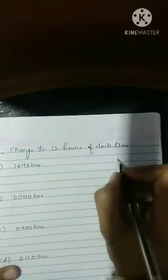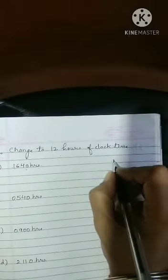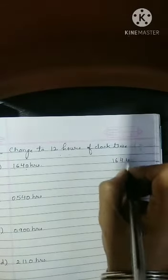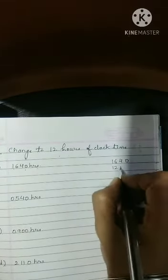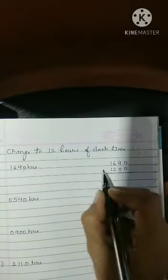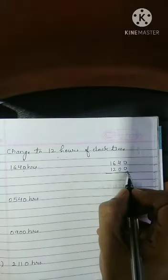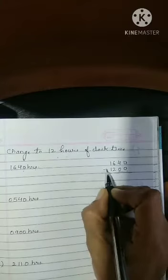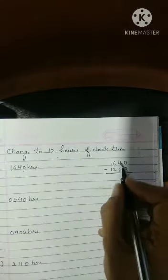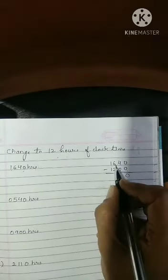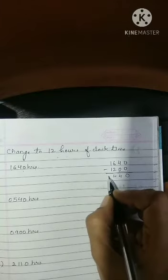See, 16:40 is given to us. In this, we will subtract 12. See, 12 I am saying but I am writing 00 also. Don't write 12 over here. Subtract. 0 minus 0 is 0, 4 minus 0 is 4, 6 minus 2 is 4, 1 minus 1 is 0.